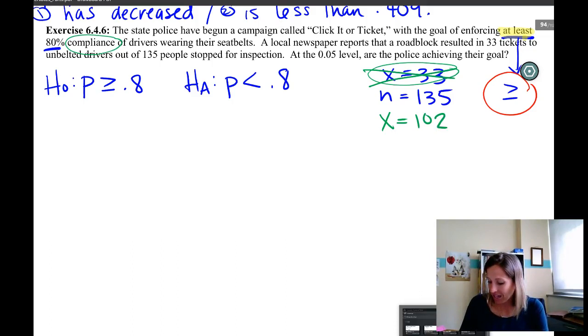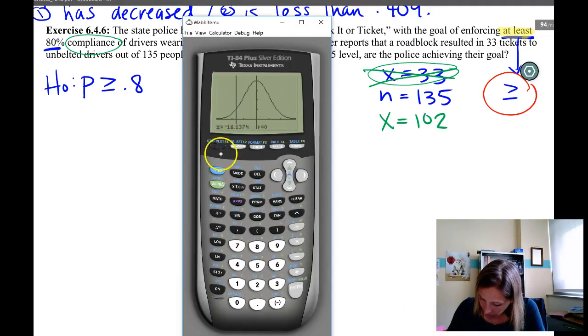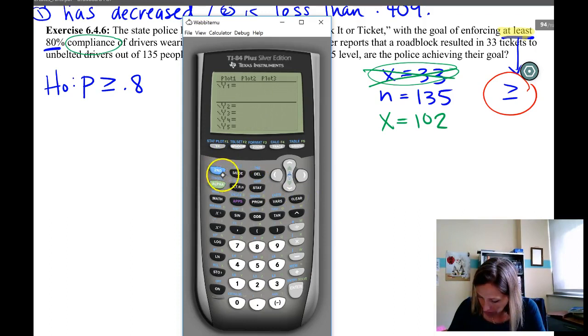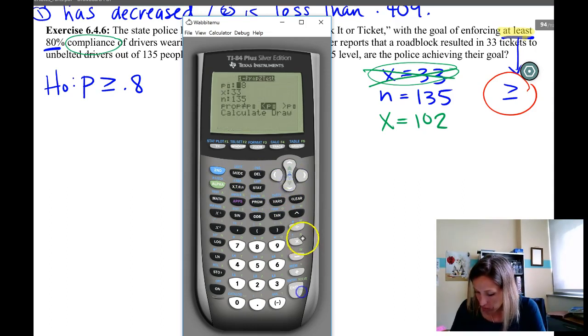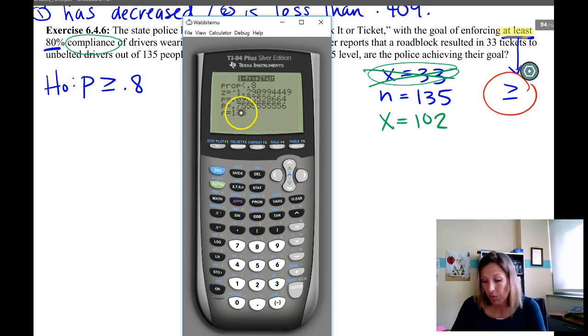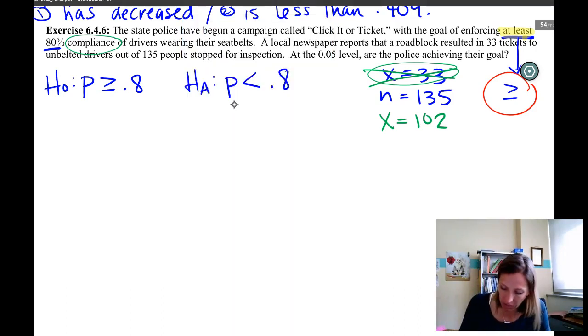So if we fix that in our calculator and change this to 102, this time I'm going to calculate. Now we get a p hat of 75.56%, which is much closer to the 80% we were comparing it to. And our z score is actually something reasonable and our p value is something reasonable. So now our steps one, two and three actually make sense.